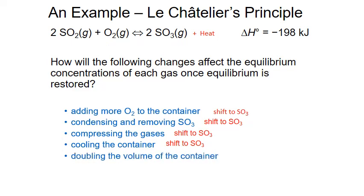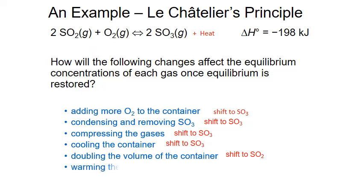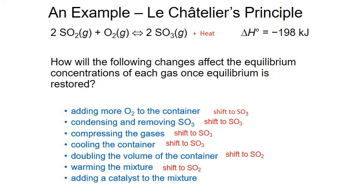Now let's double the volume of the container. This reduces pressure, so the reaction shifts to the side with more moles of gas — that's the reactant side with three moles total. So we shift to the reactants, sulfur dioxide and oxygen gas. Next, let's warm the mixture — this increases temperature, which increases heat. To counterbalance this extra heat, we consume it in the reverse reaction, so we again shift to the reactants, SO2 and O2. Finally, adding a catalyst means we get to our final equilibrium position more quickly, but it doesn't change the position — we still have the same concentrations of reactants and products at equilibrium.